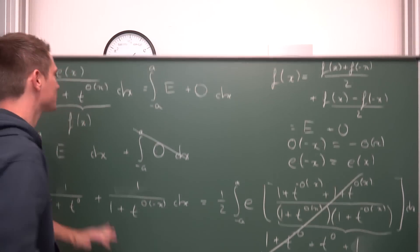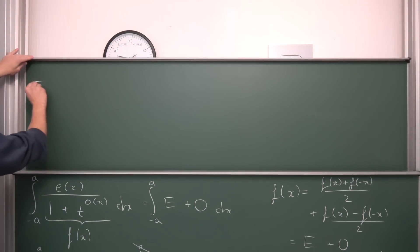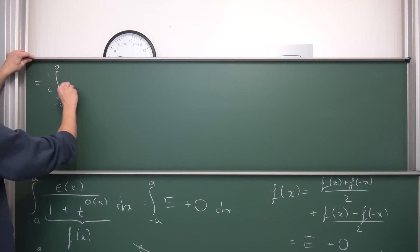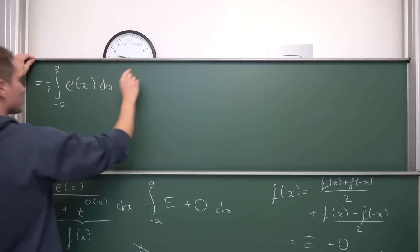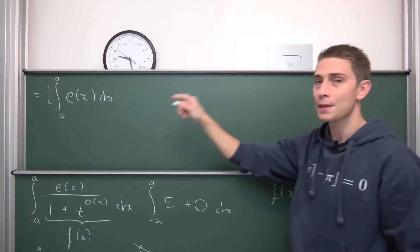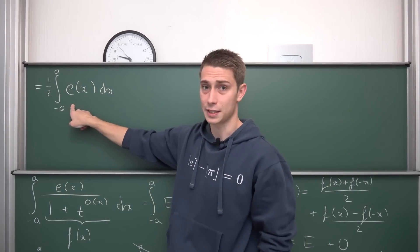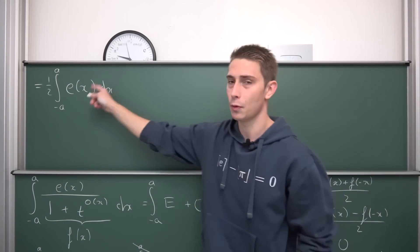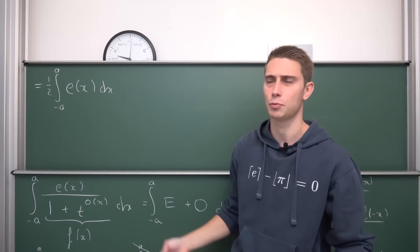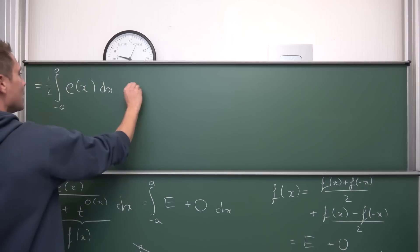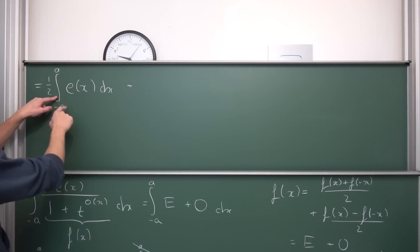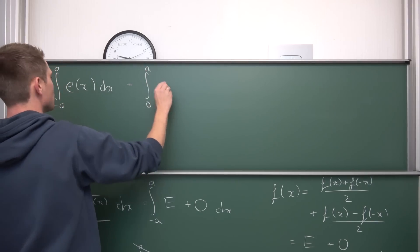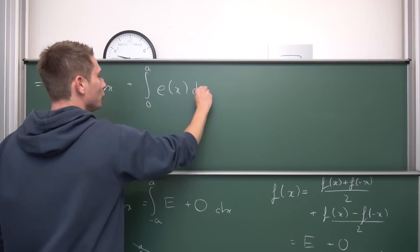Leaving us with a final answer: our integral is nothing but the integral from negative a to a of one half times our even function e of x, integrated with respect to x. And what's even better — we have an even function over a symmetric integral, meaning we get 2 times the integral from 0 to a of e of x. This is one of the properties of even functions. The 2 and the one half cancel out, leaving us with a final answer of the integral from 0 to a of e of x dx.